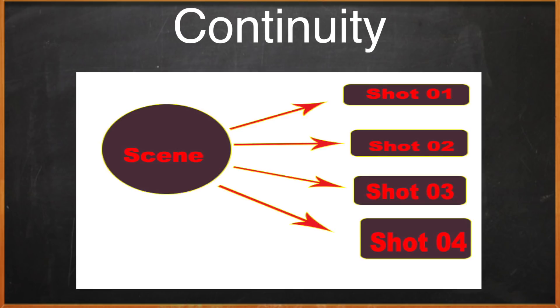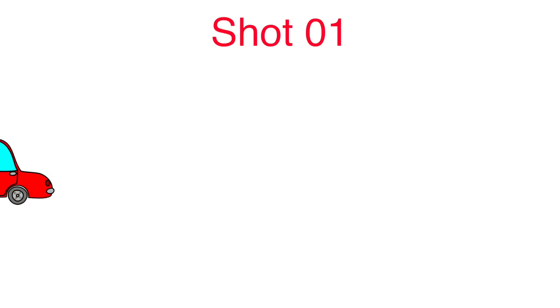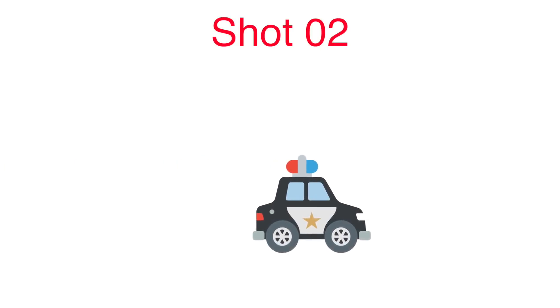Continuity यानी कि एक scene को हम लोग एक shot में नहीं shoot करते, बल्कि कई सारे multiple shots में shoot करते हैं। जैसे मान लीजिए एक chasing का scene है — एक चोर कार लेके भाग रहा है, पुलिस पकड़ने की कोशिश कर रही है। पहले shot में कार screen के left से right जा रही है, और दूसरे shot में पुलिस की गाड़ी भी left से right जा रही है।